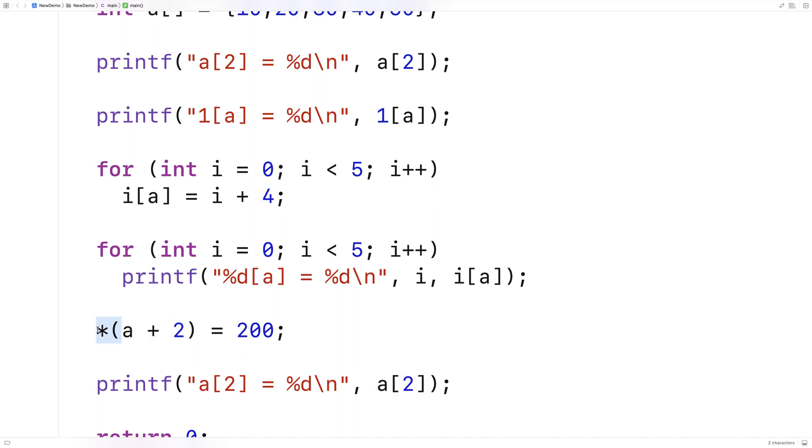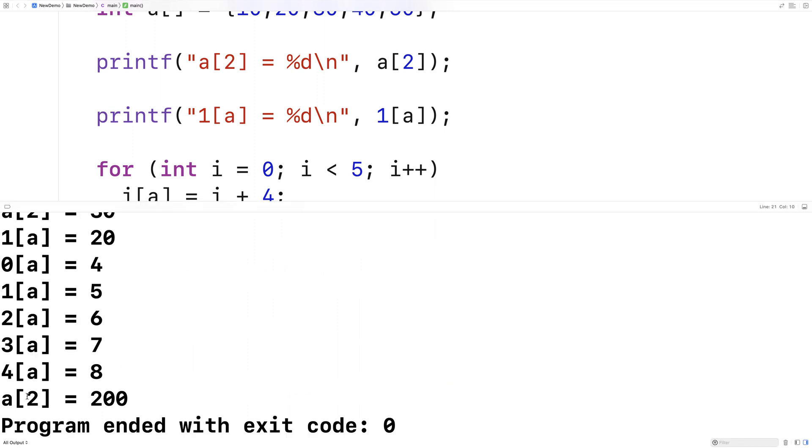Now with this notation here, it makes no difference if we say a plus 2 or 2 plus a. So I could say 2 plus a is equal to 200, I can save this and run it, and it's going to work exactly the same as before, and we'll end up with a at index 2 being equal to 200.